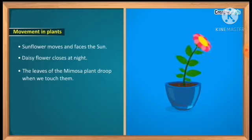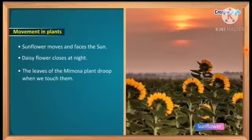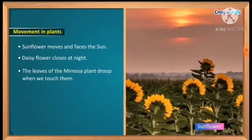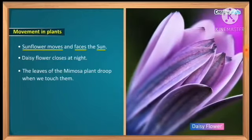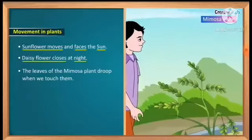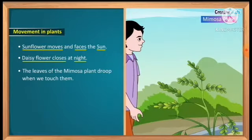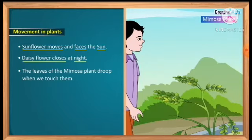Movement happens in plants also. Like the sunflower moves and faces the sun — the flower turns towards the sun. The daisy flower closes at night. The leaves of the mimosa plant droop when we touch them — if we touch the mimosa plant, its leaves close. So there is movement in plants too, in their parts. But they do not move from one place to another like us.